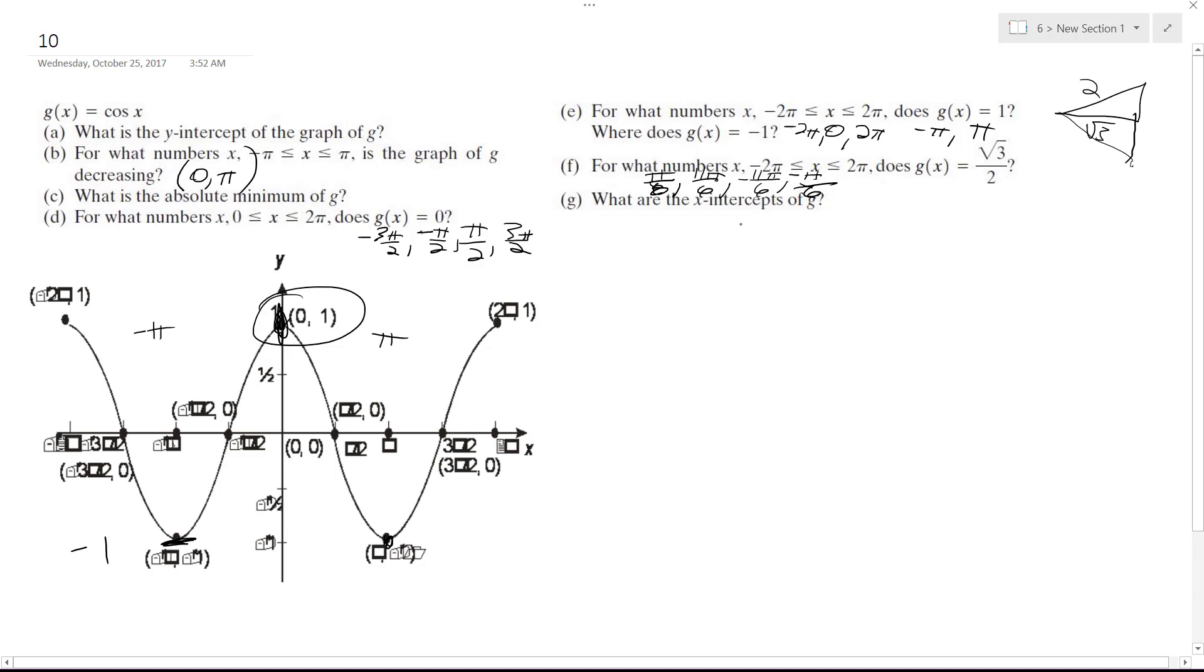What are the x-intercepts of g? We did this. This would be where it's zero: negative 3π/2, negative π/2, π/2, and 3π/2. Alright, hopefully that helps.